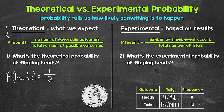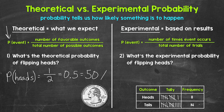We can write this probability as a fraction, decimal, and percent. We have our fraction, so let's write it as a decimal and percent as well. To go from a fraction to a decimal, we divide the numerator by the denominator: one divided by two gives us 0.5. Now for the percent, we multiply the decimal by 100 — move the decimal twice to the right — and that gives us 50%. We have a 50% chance of flipping heads.